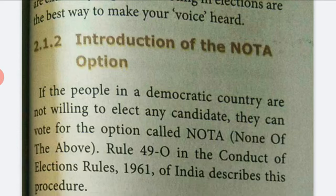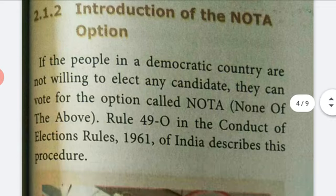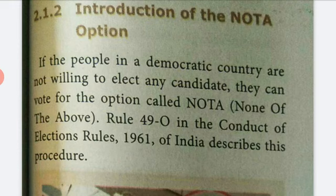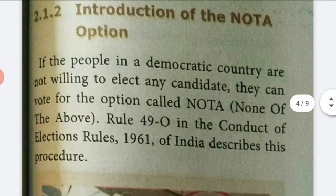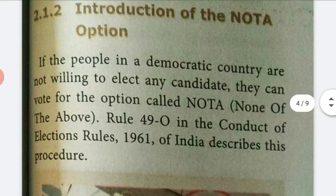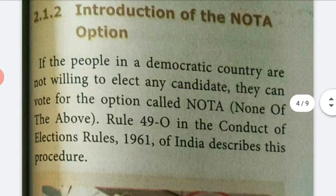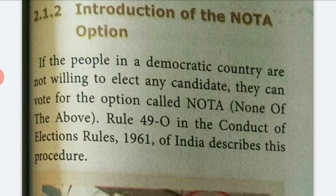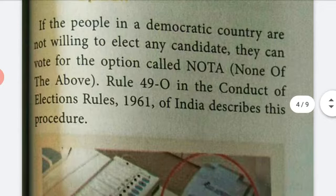If the people in a democratic country are not willing to elect any candidate, they can vote for the option called NOTA. Rule 49-O in the Conduct of Election Rules 1961 of India describes this procedure.